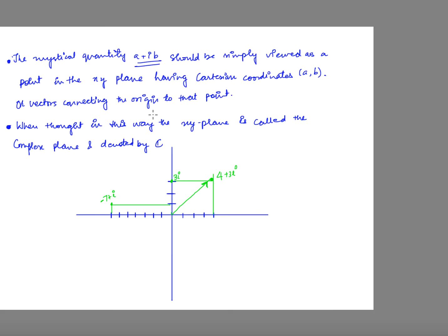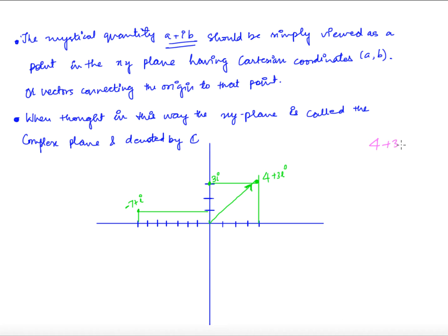For example, if you have the number 4 + 3i, you can consider it as a point in the xy-plane. The x-axis gives x-coordinate 4, and 3i gives y-coordinate 3. So this point is (4, 3), and you can consider 4 + 3i as a complex number represented by that point.